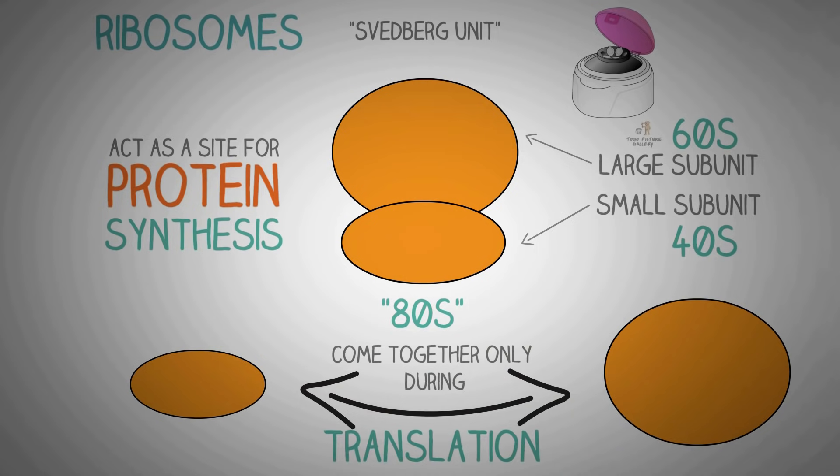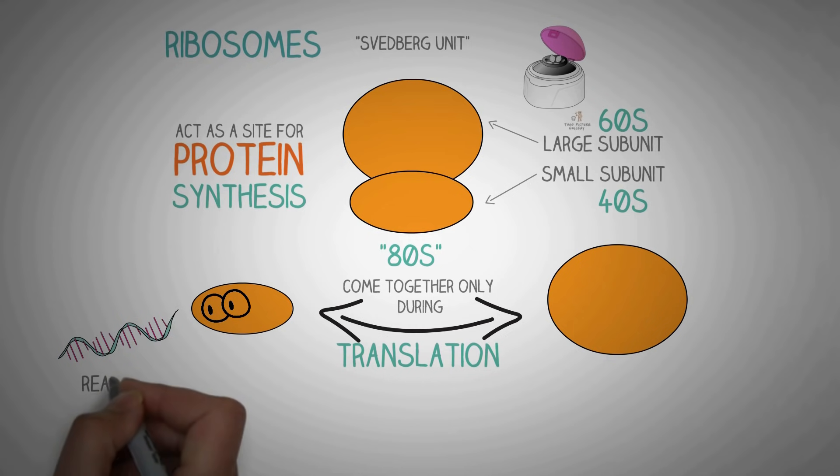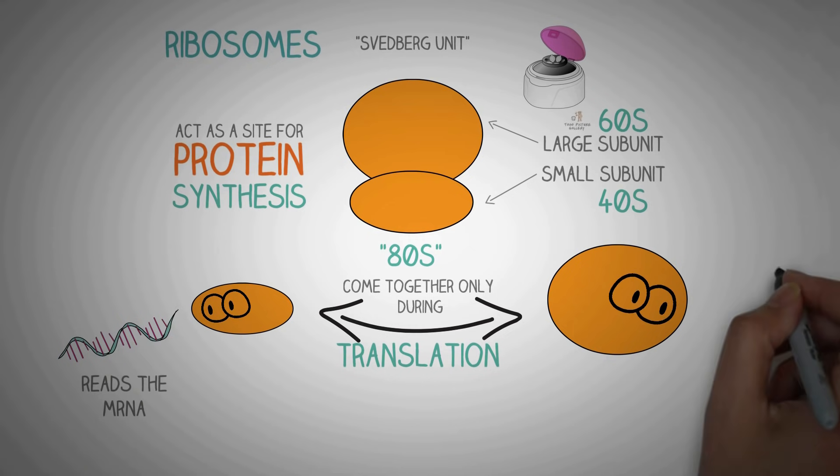These subunits have different jobs as well. The small subunit reads the mRNA whereas the large subunit joins the amino acids to form a polypeptide chain.